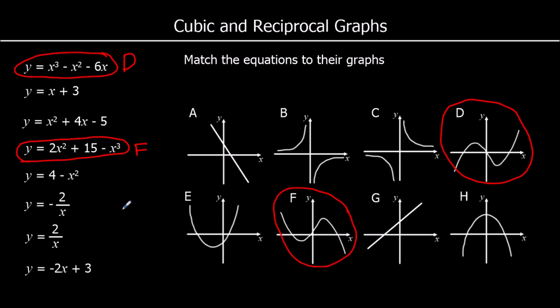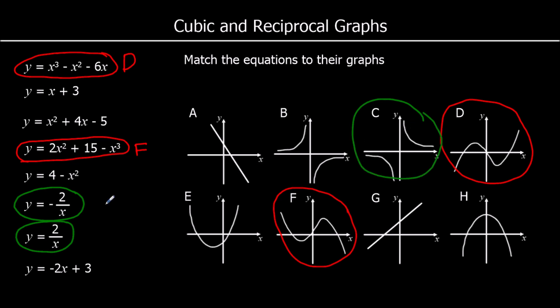For the reciprocal graphs — 2 over x and negative 2 over x — the reciprocal shapes are B and C. The positive reciprocal goes from bottom left to top right, so that's C, which is 2 over x. B is the negative reciprocal, going from top left to bottom right, which is negative 2 over x.